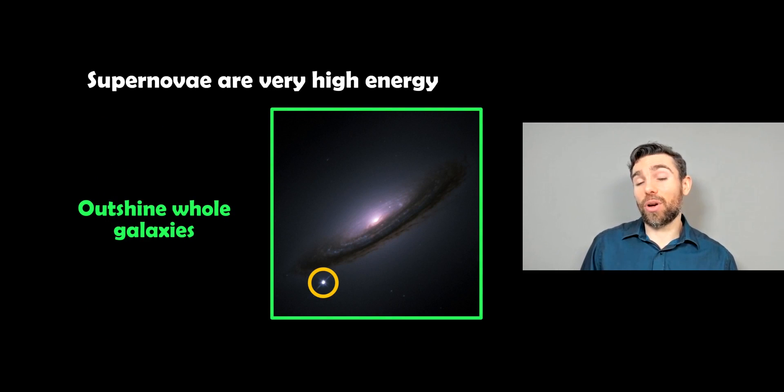And these supernovas can actually outshine entire galaxies. So galaxies are collections of billions and billions of other stars, and to have a single star that's gone supernova to then outshine all of those other stars together, and that just highlights just how high energy these events are.